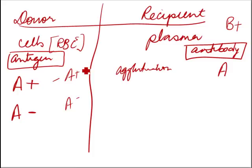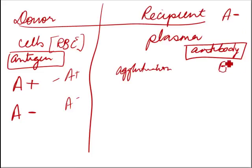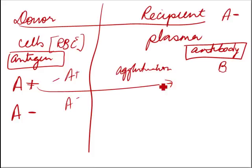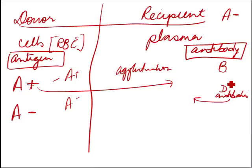Now let's look at A positive donating to an A negative person. The A negative recipient has antibody B in their plasma but no D antibody. The B antibody will not react with antigen A, so that's fine. However, the D antigen from the positive donor goes into the A negative person — there's no immediate reaction the first time, but this person begins to make D antibodies. So the second time you give them A positive blood, the D antibodies will react. This is particularly important in pregnant women. Therefore, we cannot give positive blood to a negative person.